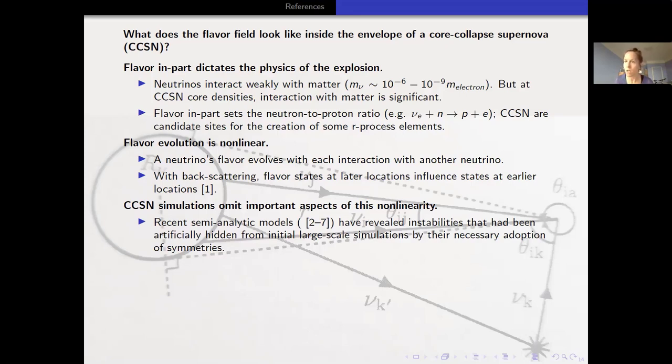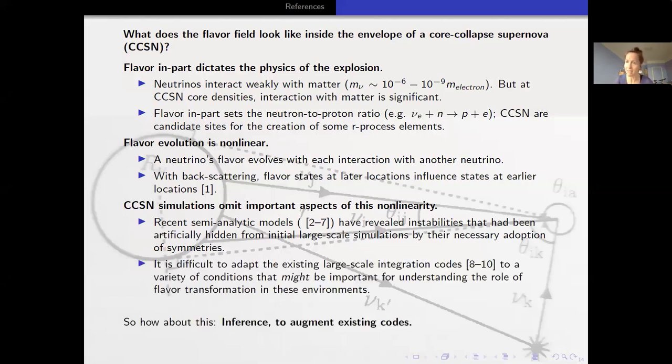Current simulations omit very important aspects of this non-linearity due to the complexity of these codes. If you wanted to investigate one particular theory about flavor evolution that hasn't been posed, it could take a year or two to rejigger your code to look at that specific scenario, and that scenario might not turn out to be useful for your purposes.